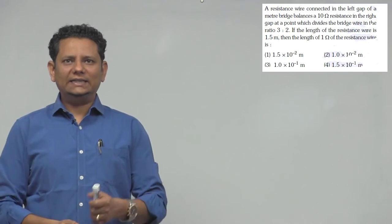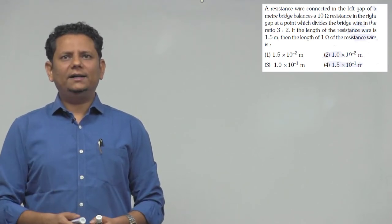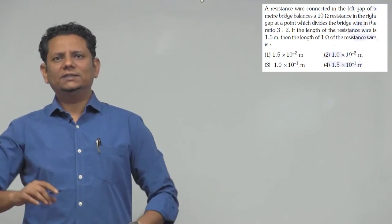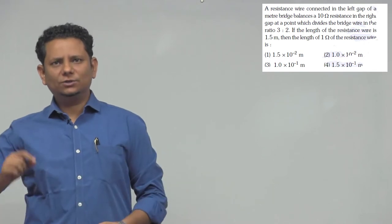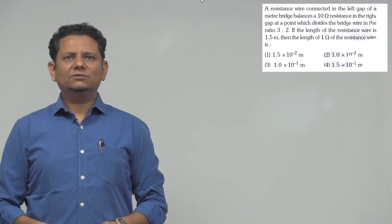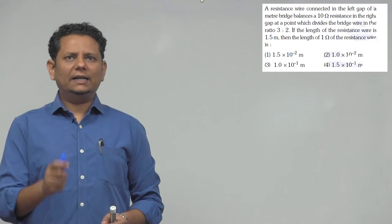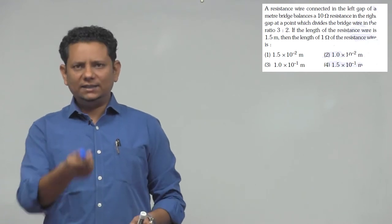Next question. It says a resistance wire connected in the left gap of a meter bridge balances a 10 ohm resistance in the right gap at a point which divides the bridge wire in the ratio 3 is to 2. If length of the resistance wire is 1.5 meter, then length of 1 ohm of the resistance wire is, four options.